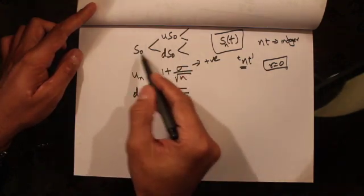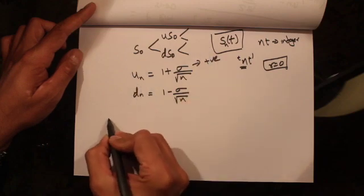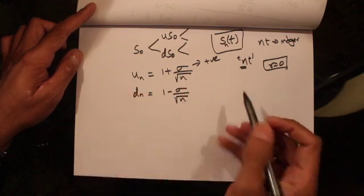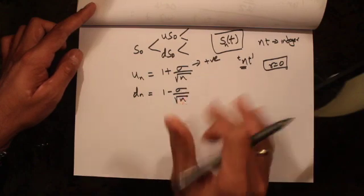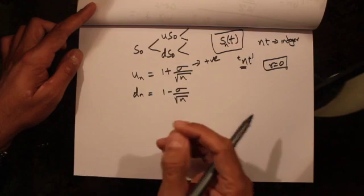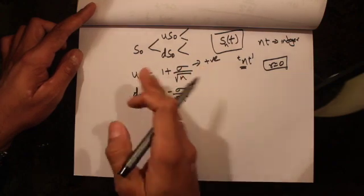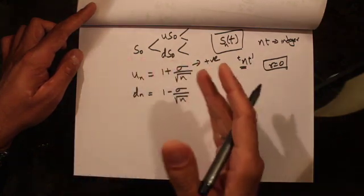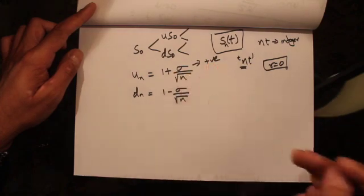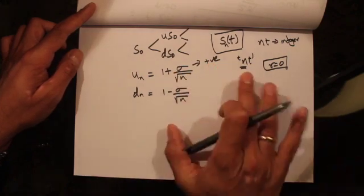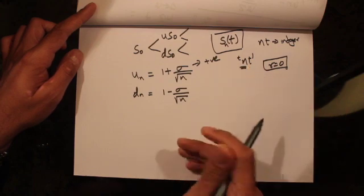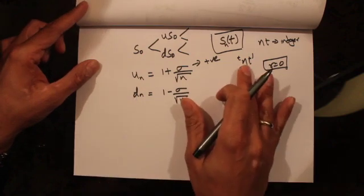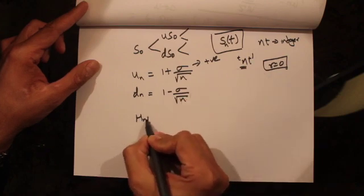Now I want to look at the value of the stock at time t. As discussed, at time t there are n·t time steps, and at every step we toss a coin, so total number of coin tosses at time t is n·t. We denote the number of heads obtained in those n·t coin tosses as h(n,t).